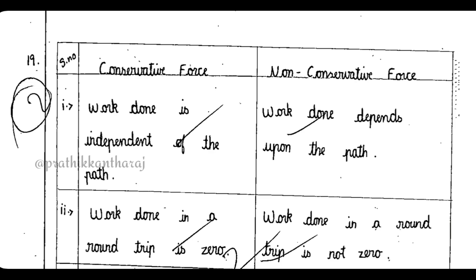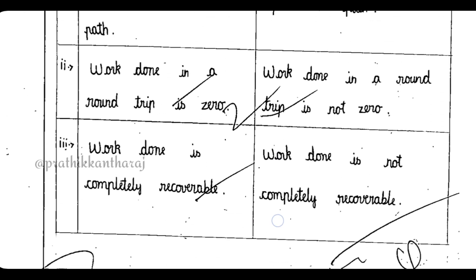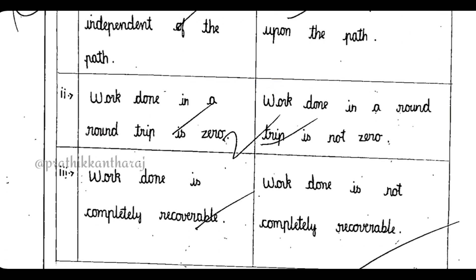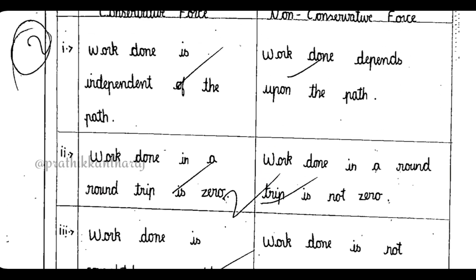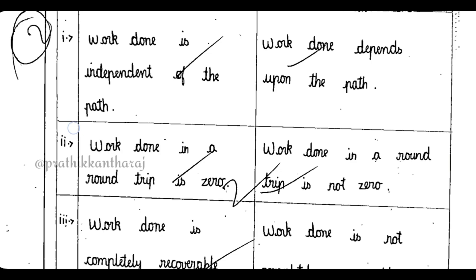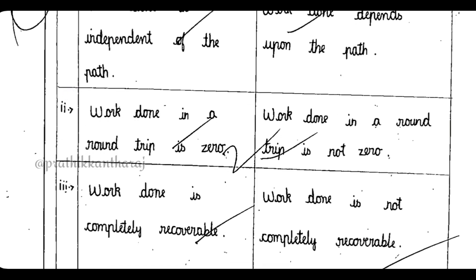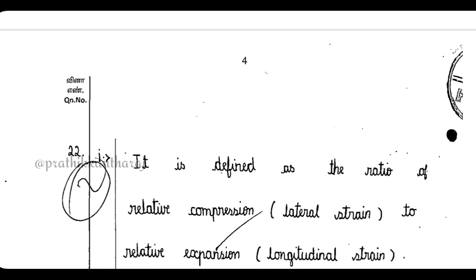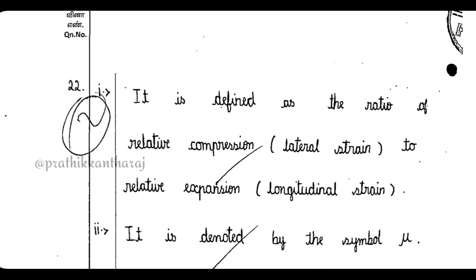For conservative force and non-conservative force, if you have to get two points — in this case, if you have 3 points, like X is given, you have to get the marks. Suppose you miss the first or second point, that's a minor mistake. You have to consider that you get correct marks. So sometimes it is good to improve your writing strategy.